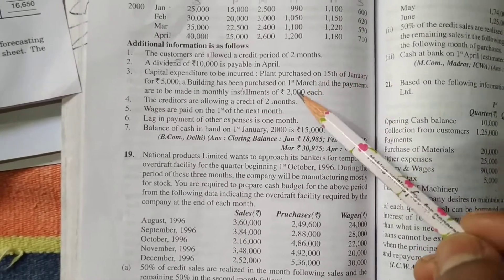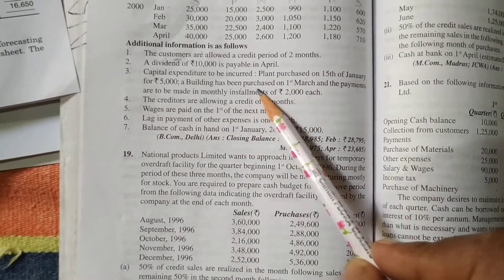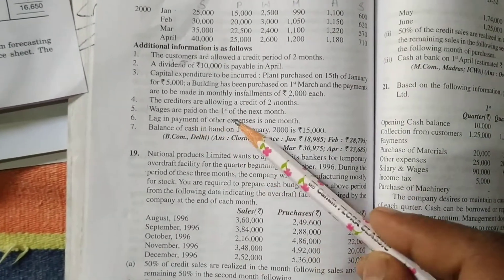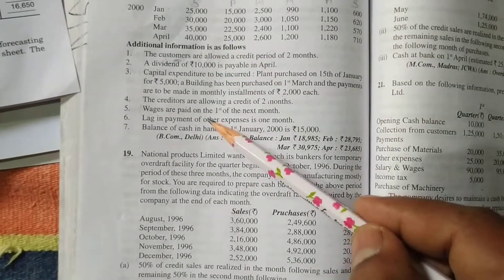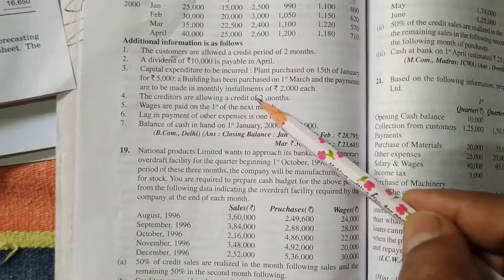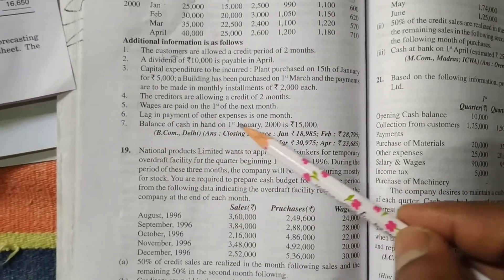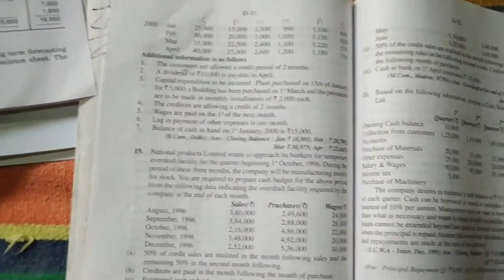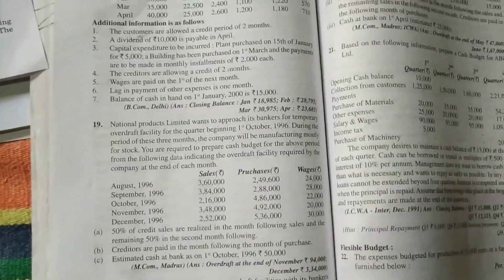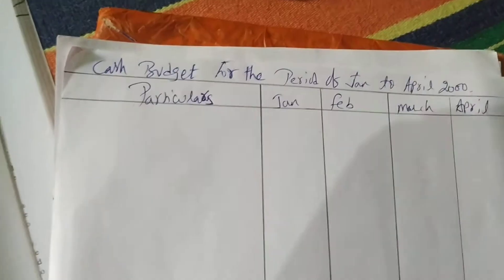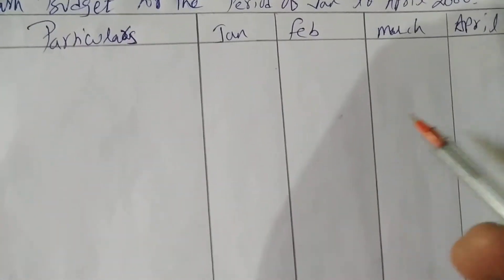Creditors are also allowed a credit period of two months. Wages are paid on the first of the next month — so one month after. Other expenses are also paid after one month. The opening balance of cash on 1st January 2000 is 15,000. I have prepared the cash budget for January to April — four months: January, February, March, April.